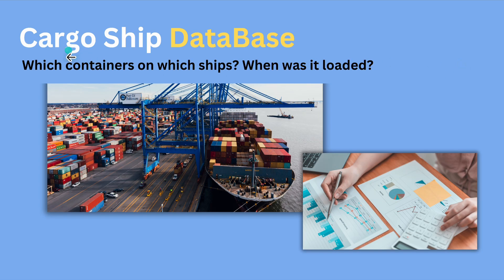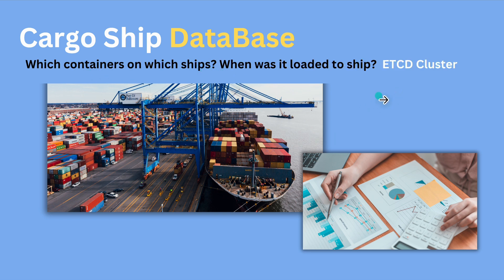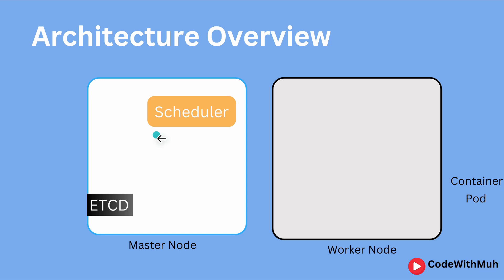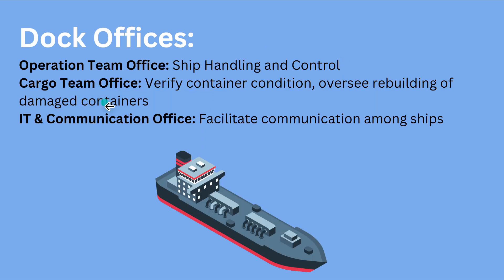Next, every cargo ship has a database so we know which containers are on which ship and when they were loaded. Similarly, in Kubernetes we need to store database and cluster information. This is handled by the etcd cluster, which is a component of the master node that stores all information about the Kubernetes cluster.